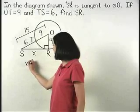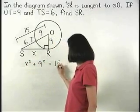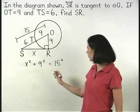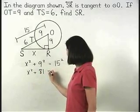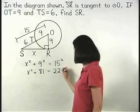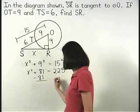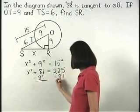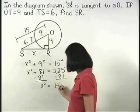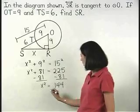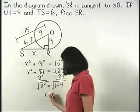Which simplifies to X squared plus 81 equals 225. Subtracting 81 from both sides gives us X squared equals 144. And square rooting both sides, we find that X equals 12.